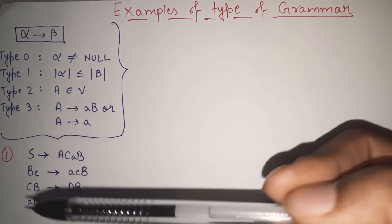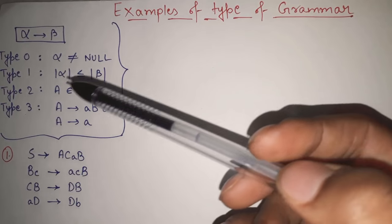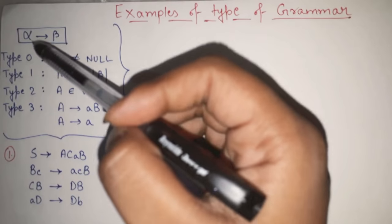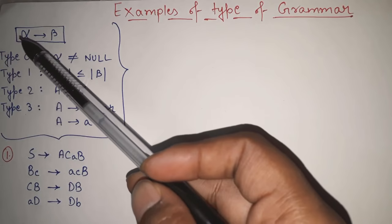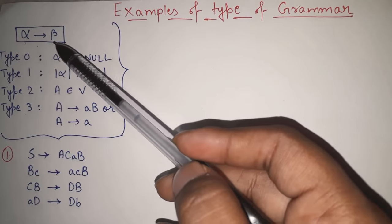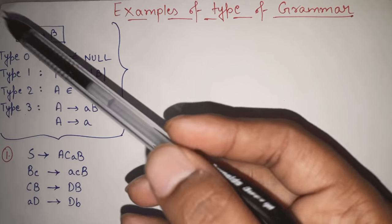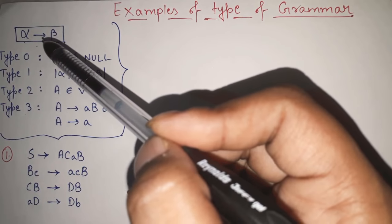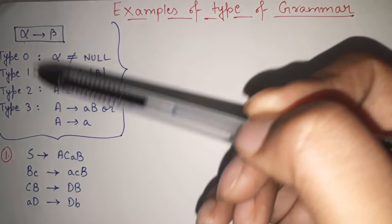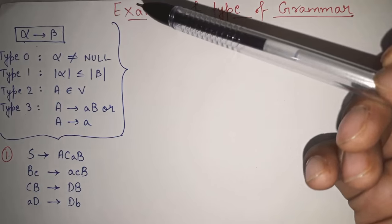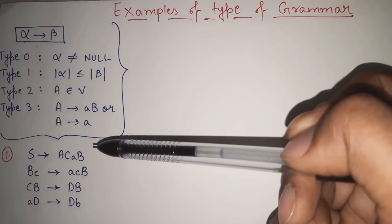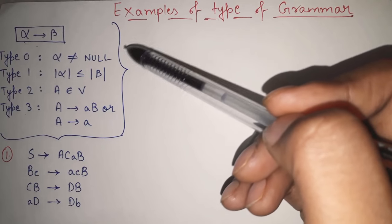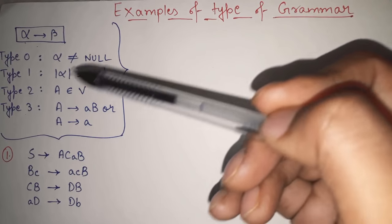So, if I do a quick revision — I have already told you that the productions of my grammar are always of the type alpha gives beta. Alpha can be anything on the LHS and beta can be anything on the RHS. We are just taking the general form. In this video, let me quickly tell you the shortcut of determining which type of grammar it is.